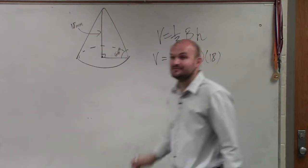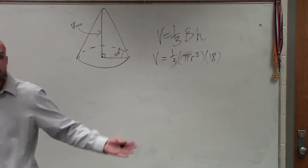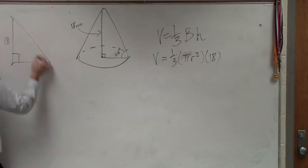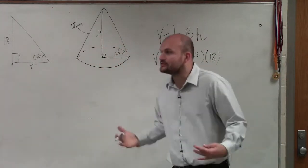So the problem is we need to figure out what r is, because they don't tell us what r is. They do give us, however, a triangle. And they say that's 18 and that's 66. We need to figure out r. So to do that, we have to use our special right triangles.